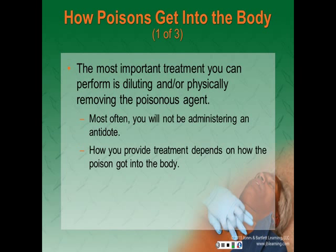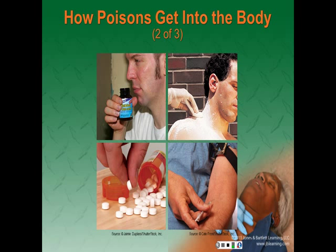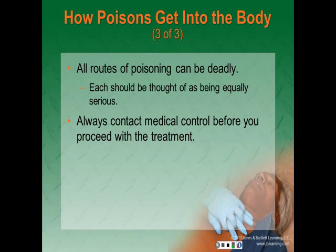The most important treatment for poisoning is the dilution or physical removal of the agent. Most often you will not be administering a specific antidote because most poisons do not have one. How you provide treatment depends on how the poisoning entered the patient's body. The four avenues to consider are inhalation, absorption or surface contact, ingestion, or injection. All routes of poisoning can be deadly and should be considered equally serious. Always contact medical control before proceeding with treatment of any poisoning victim.